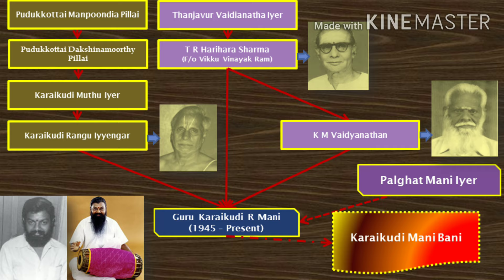Similarly, the style adopted by Guru Karaikudi R. Mani: he was first trained by Karaikudi Rengu Ayyangar under Pudukkottai Bani, and later by T.R. Hariharasharma and K.M. Vaithinathan, both from Tanjavur Bani. Further, he was highly influenced by Palakkad Maniayar, whom he considered a role model, and came up with a unique style which later emerged as a Bani with many branches and leaves.